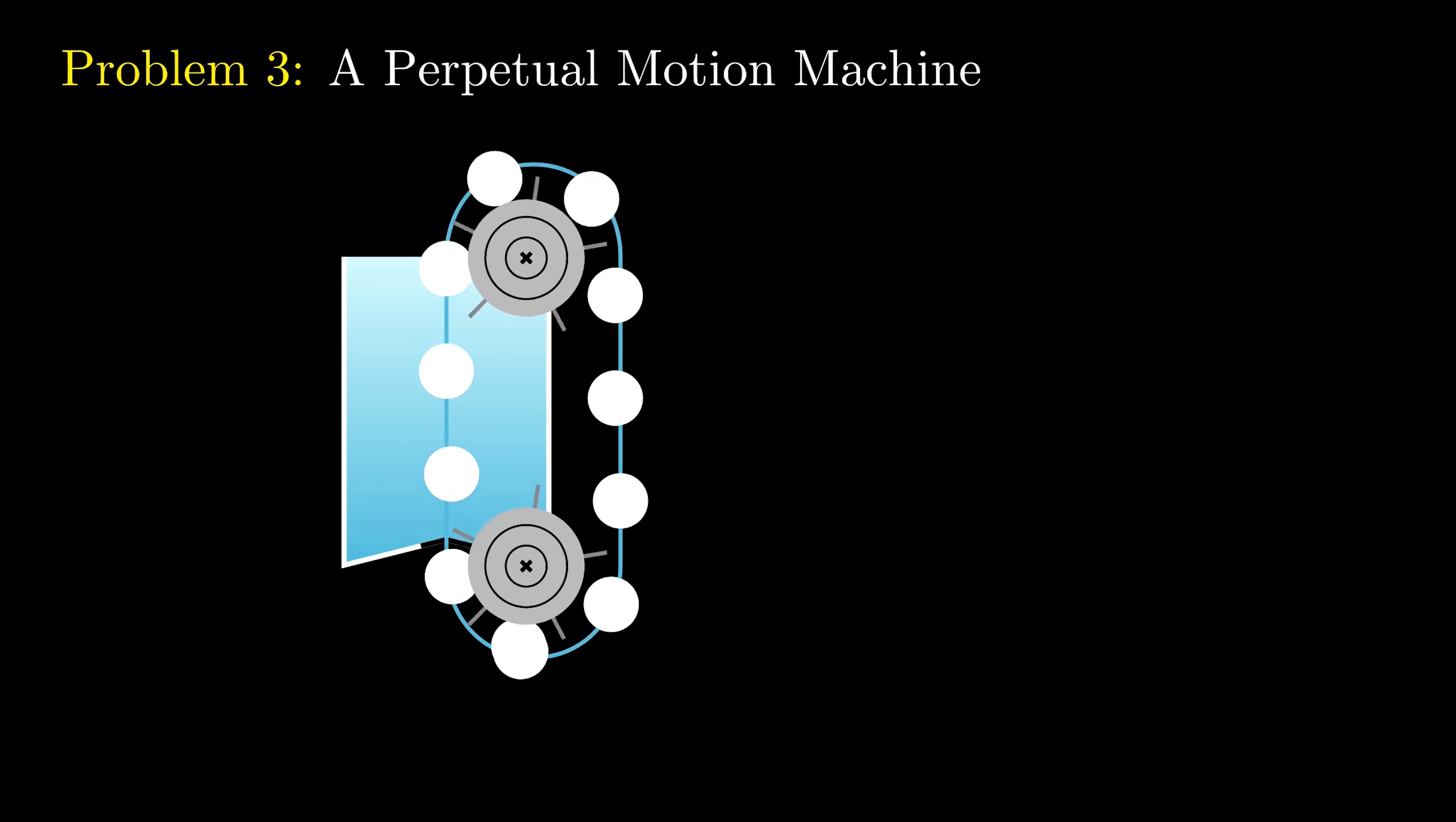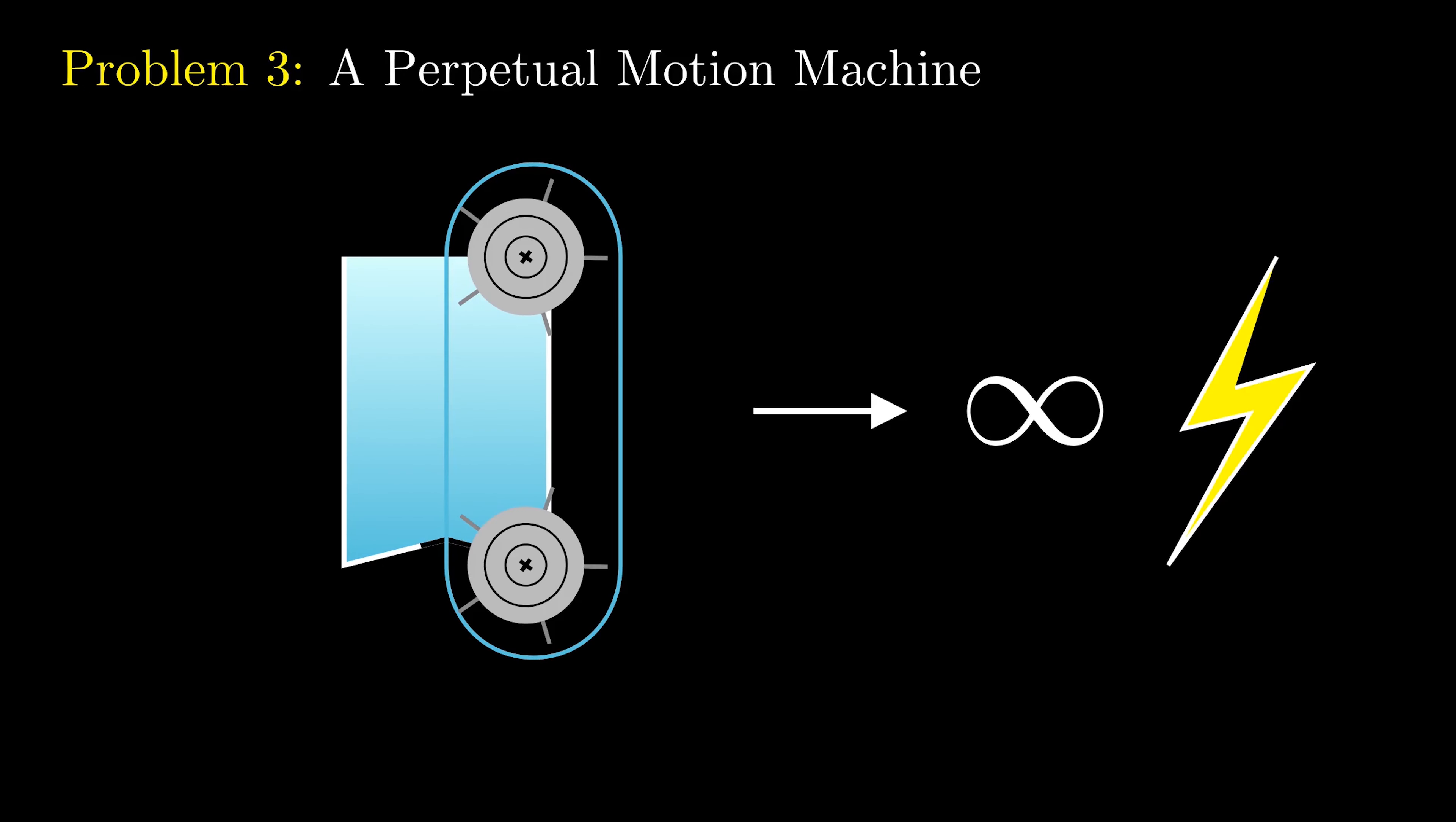So if we release it, it should start rotating faster and faster, right? So if it does that, we can connect these pulleys to a generator and we'd get infinite electricity. But this is not allowed by the conservation of energy.